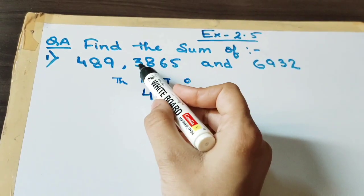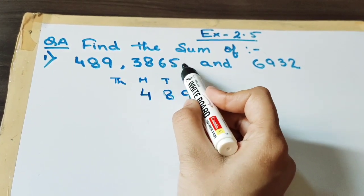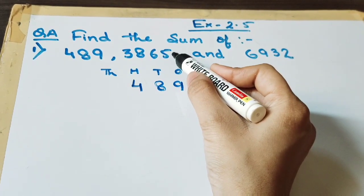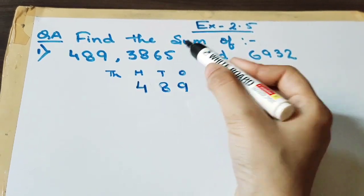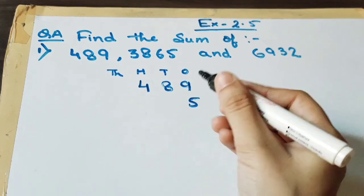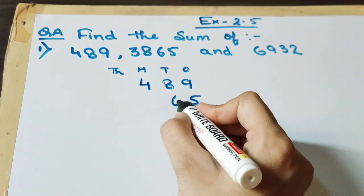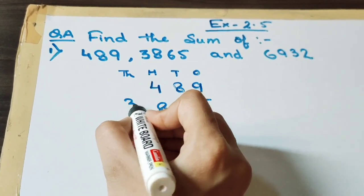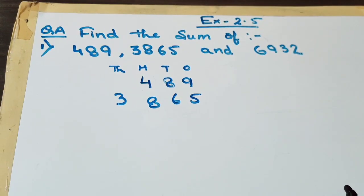Now next is 3865. So when we will be writing the next number, remember that we have to start with the 1's place. So at the 1's place there is 5 and on the 10's place this is 6 and 100's place it is 8 and then 1000's place 3. We have written the second number.